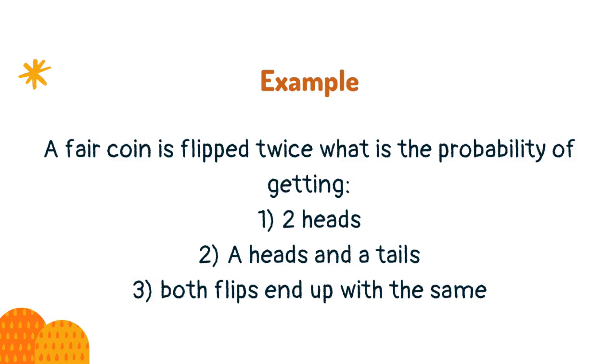A fair coin is flipped twice. What is the probability of getting: 1) two heads, 2) a heads and a tails, 3) both flips end up with the same?